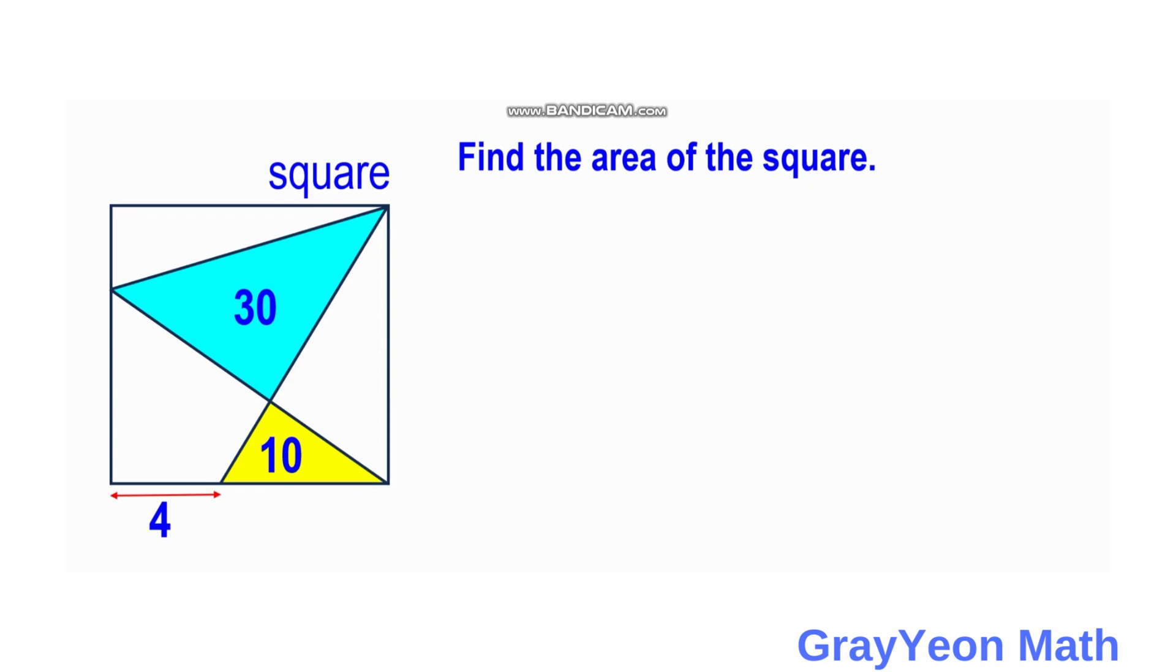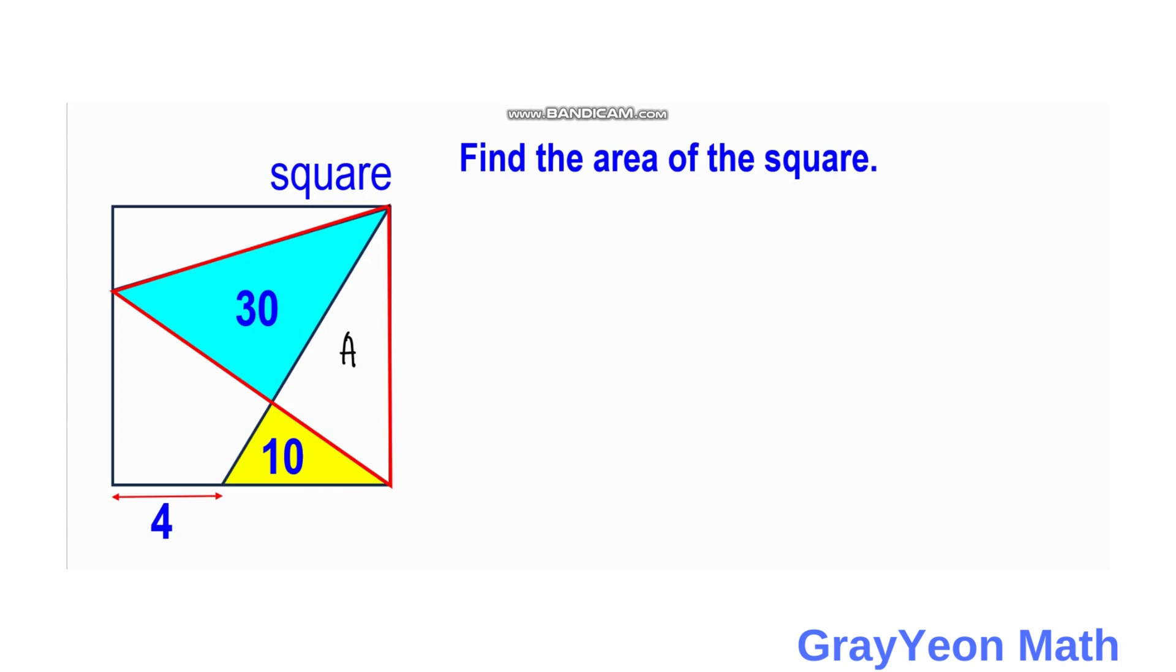First, we label the white region as A. Now we focus on the isolated triangle, which is the combination of the 30 square unit triangle and region A. The base is the side of the square, which we call S. The height is a line drawn to the side of the square, which is also S.